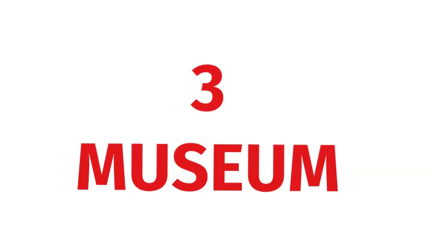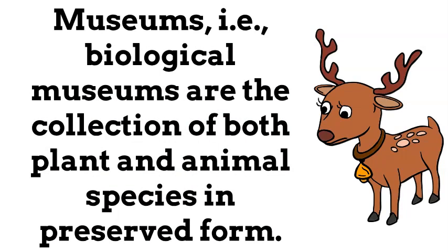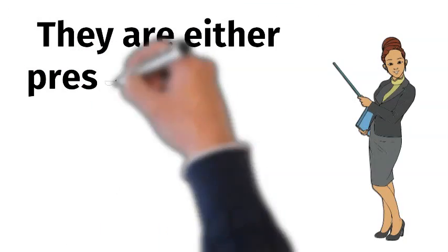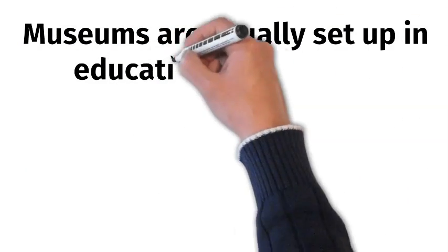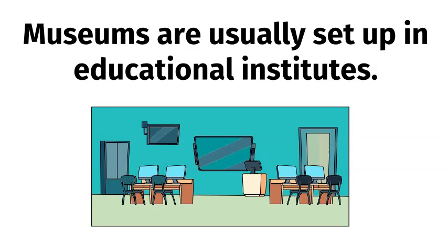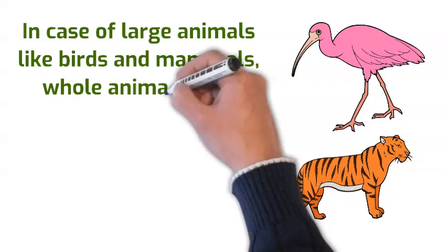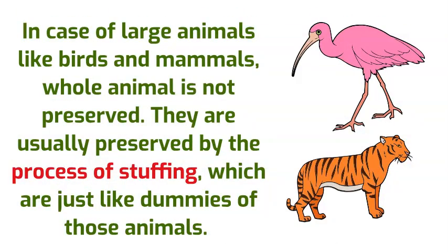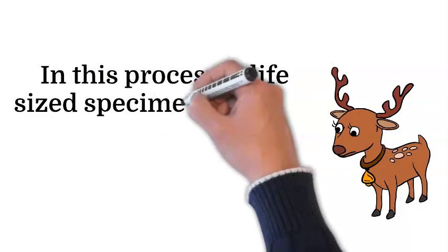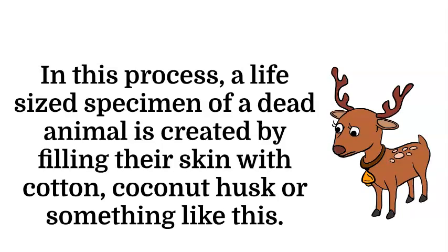The next taxonomical aid is museum. Biological museums are collections of both plant and animal species in preserved form. They are either preserved in dry form or in preservative solutions, and are usually set up in educational institutes. Insects are preserved in insect boxes after collecting, killing and pinning. In the case of large animals like birds and mammals, the whole animal is not preserved; they are usually preserved by the process of stuffing, creating life-size specimens that are just like dummies of those animals. This is done by filling their skin with cotton, cotton husk or similar material, and this process is called taxidermy.